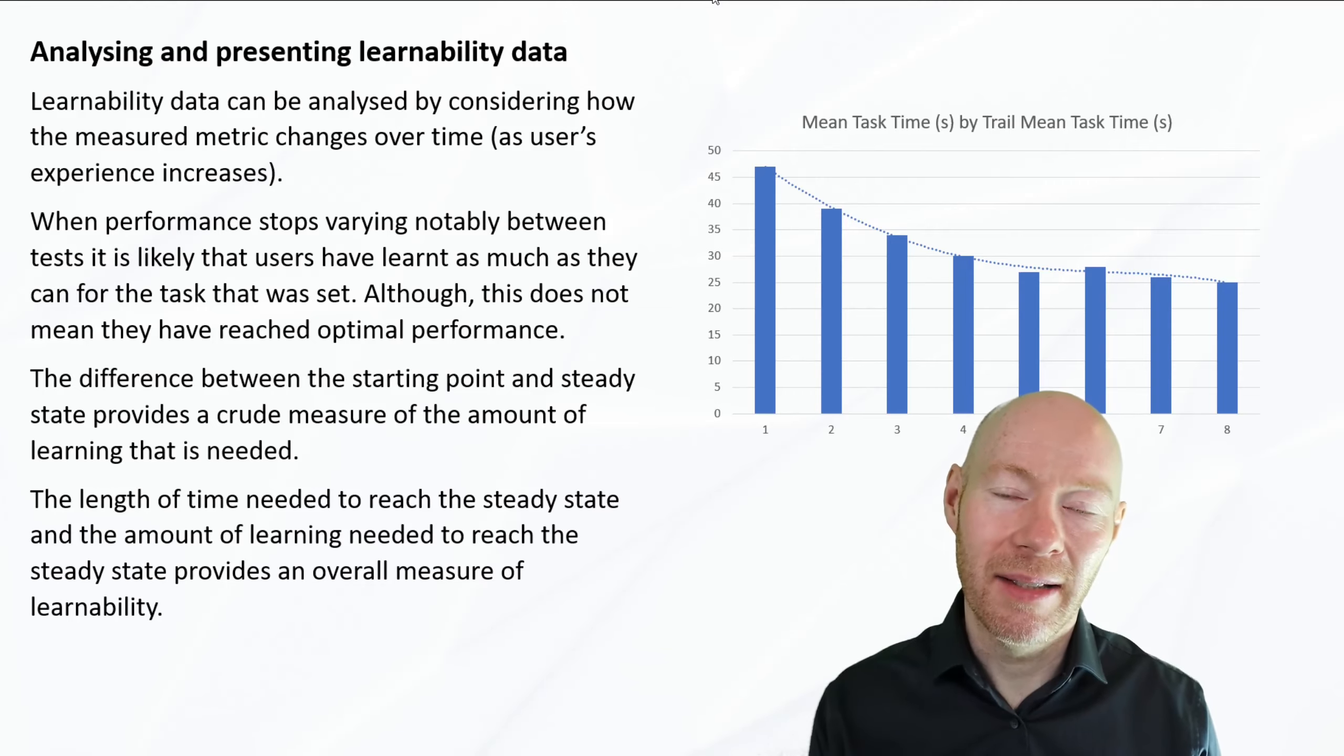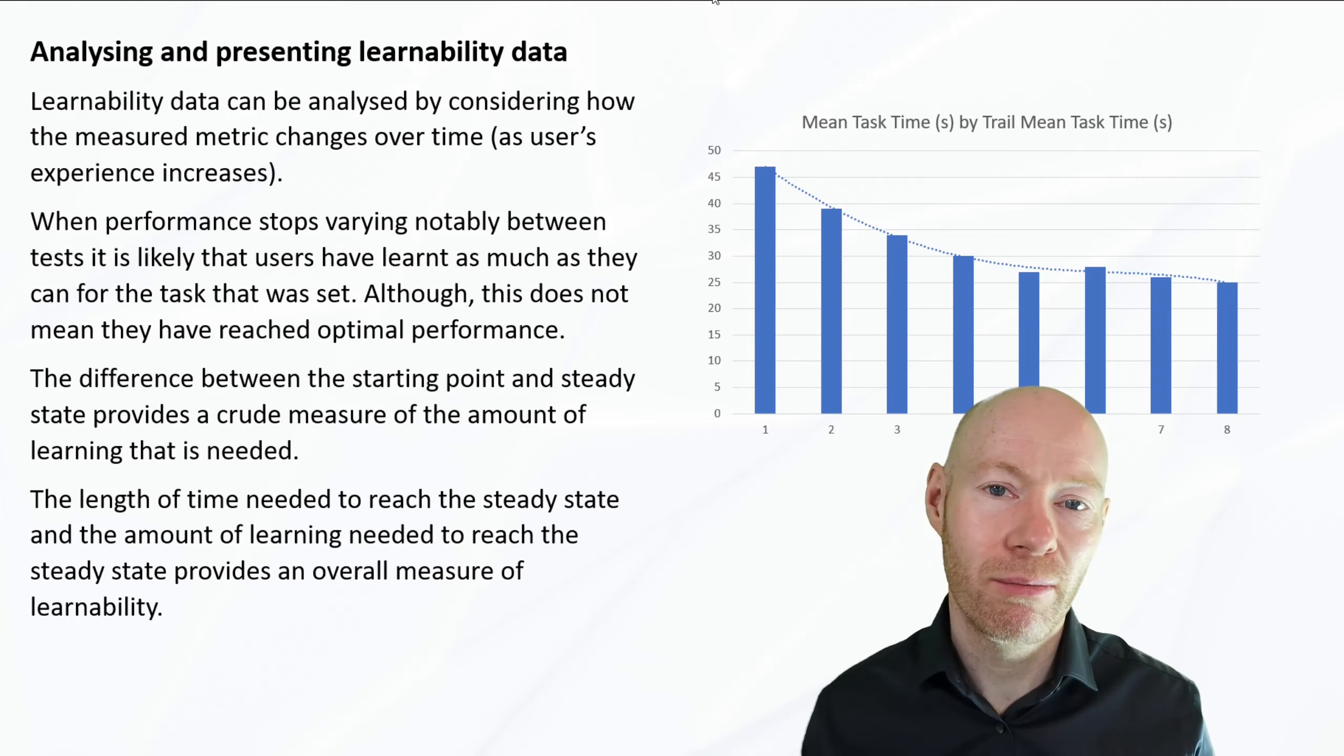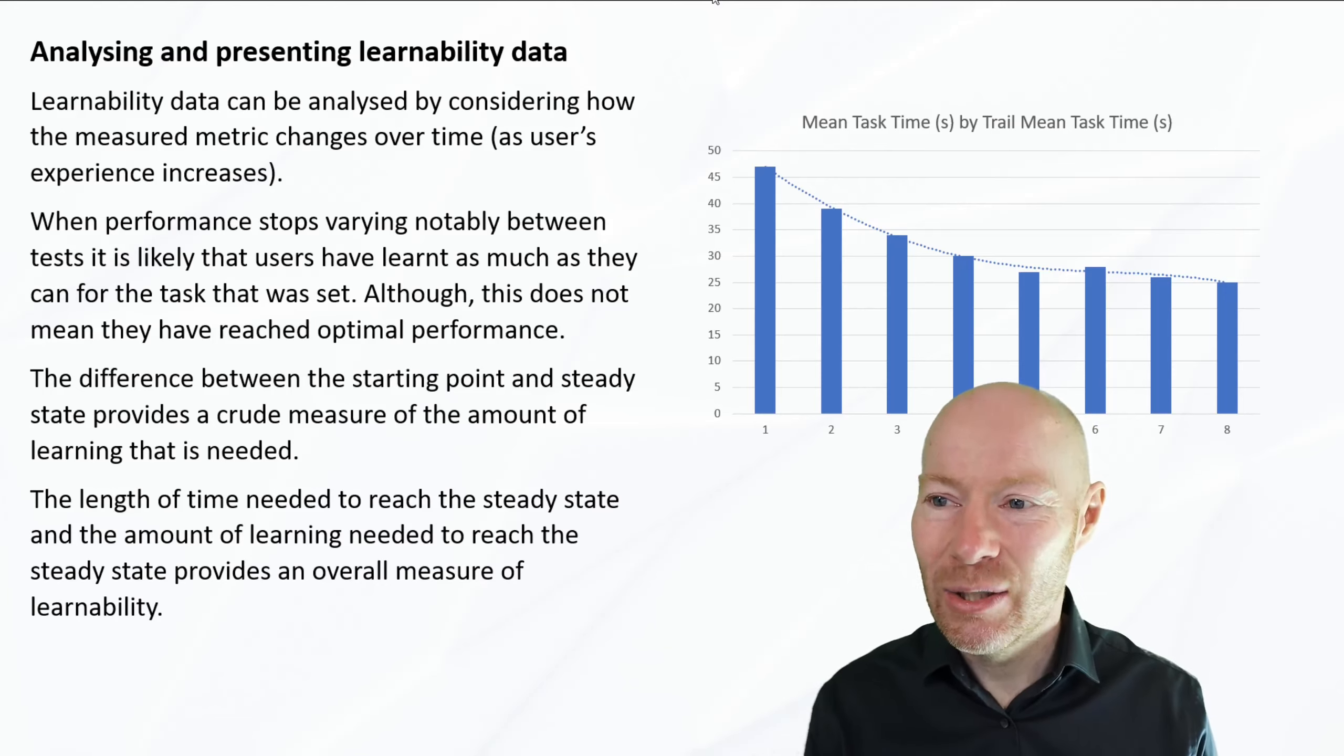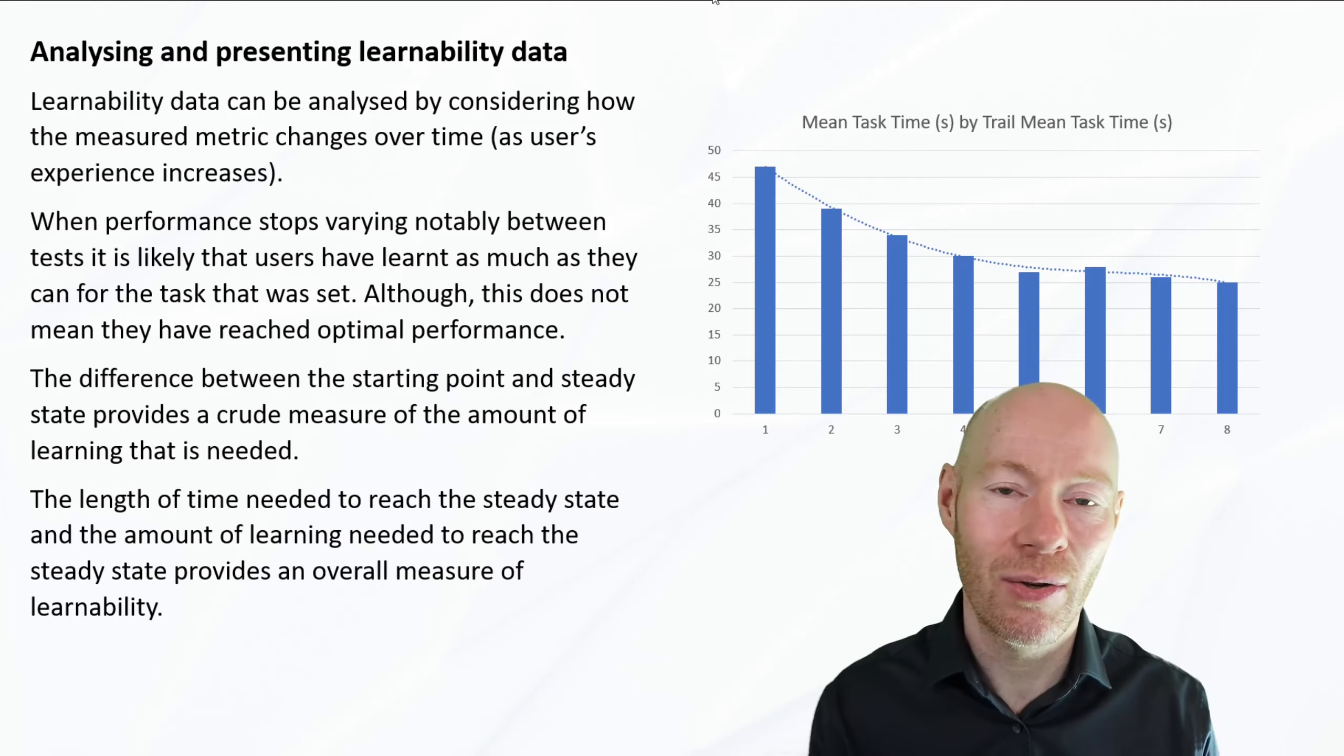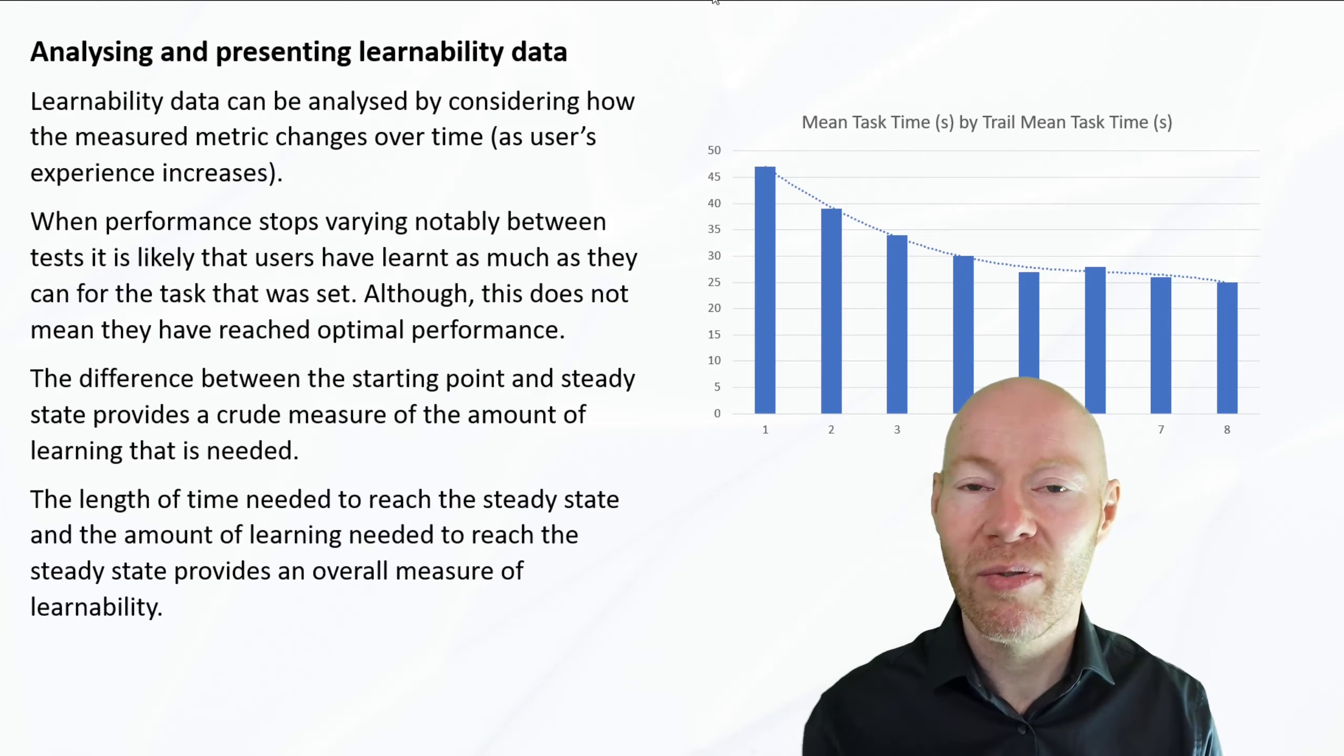There's a few assumptions here. If we plot this and we see it leveling out so that from one task to the next task it's all roughly the same, there we can reasonably safely assume that users learned whatever they are going to learn for the setup we've given. It doesn't mean they've reached optimal performance because they've been using the software as we have presented it to them. We may have a better way of presenting it or instructing the user that potentially could have given them even better performance. But for the setup we used, they've reached their optimum performance.